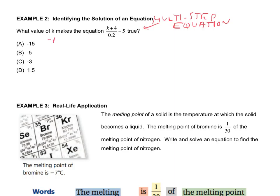Plugging in negative 15 for k and filling in the rest: negative 15 plus 4 gives us negative 11 over 0.2, and we're checking if that equals 5. Negative 11 divided by 0.2 does not give us 5 — we actually get negative 55, which certainly does not equal 5. So we move on to the next choice.